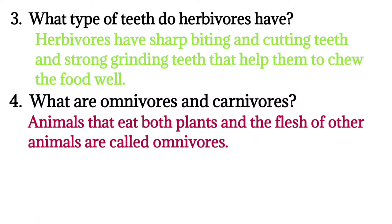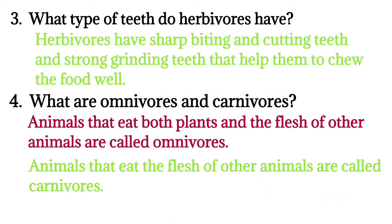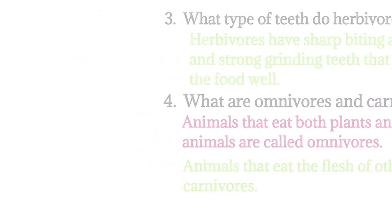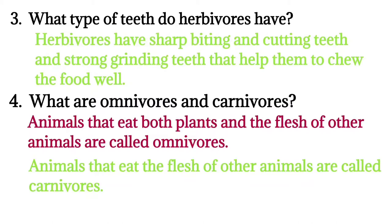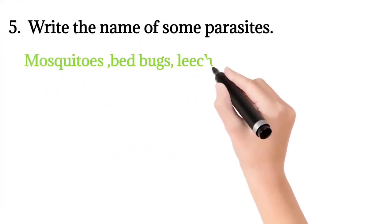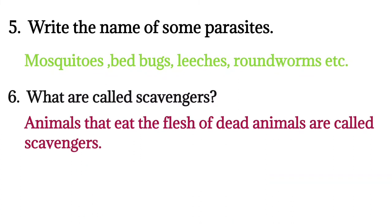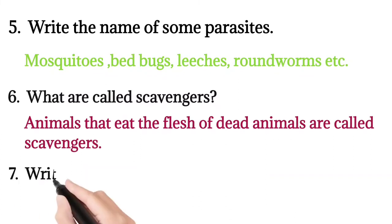Four: what are omnivores and carnivores? Animals that eat both plants and the flesh of other animals are called omnivores. Animals that eat the flesh of other animals are called carnivores. Six: write the name of some parasites - mosquitoes, bedbugs, leeches, roundworms, etc. What are called scavengers? Animals that eat the flesh of dead animals are called scavengers.